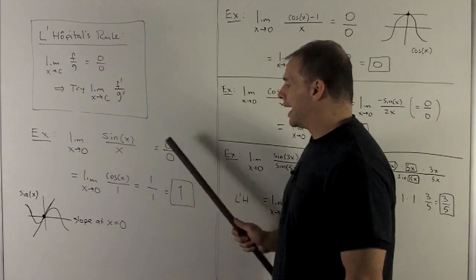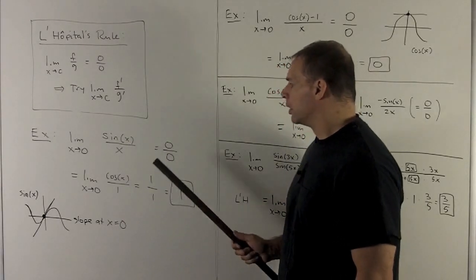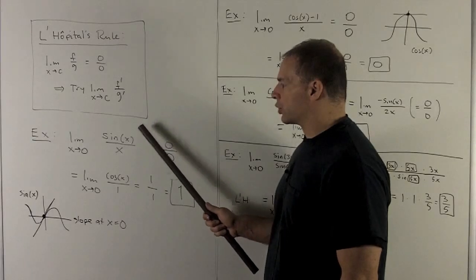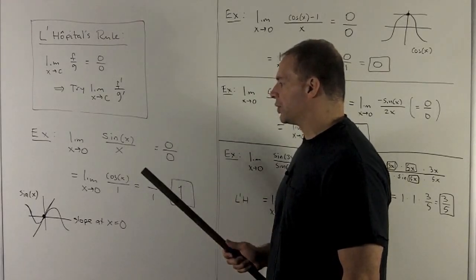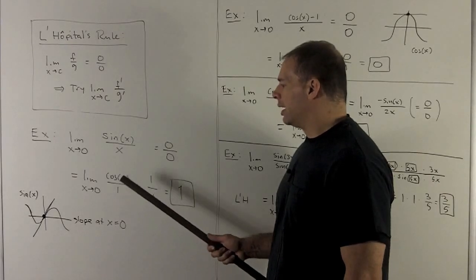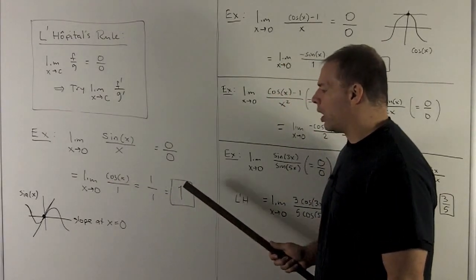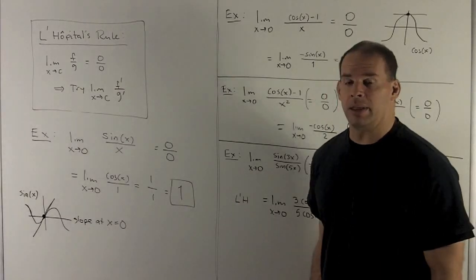If I put 0 in, we're going to get 0 over 0, taking the limit in the top and the bottom. So L'Hopital's rule says, take the derivative of the top and the bottom, and then try 0 again. Derivative of the top is cosine. Derivative of the bottom is 1. I put a 0 in. Cosine of 0 is 1. So we get 1 over 1, which gives us the 1 that we expect.